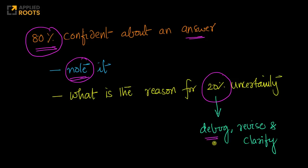Debug why you have the 20% uncertainty. Revise and get clarity. That is very, very important, because this 20% uncertainty that you are leaving now could cost you dearly in the examination.